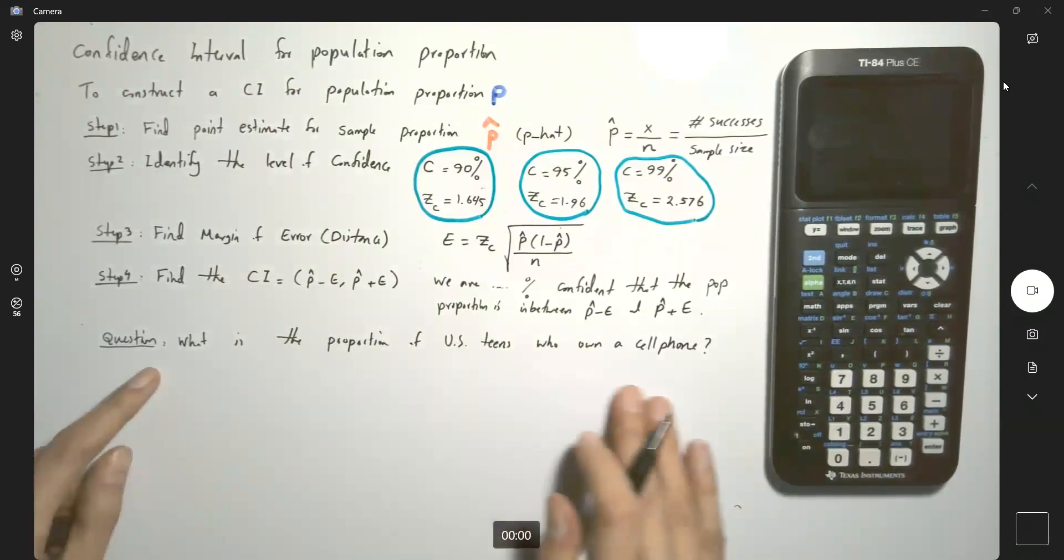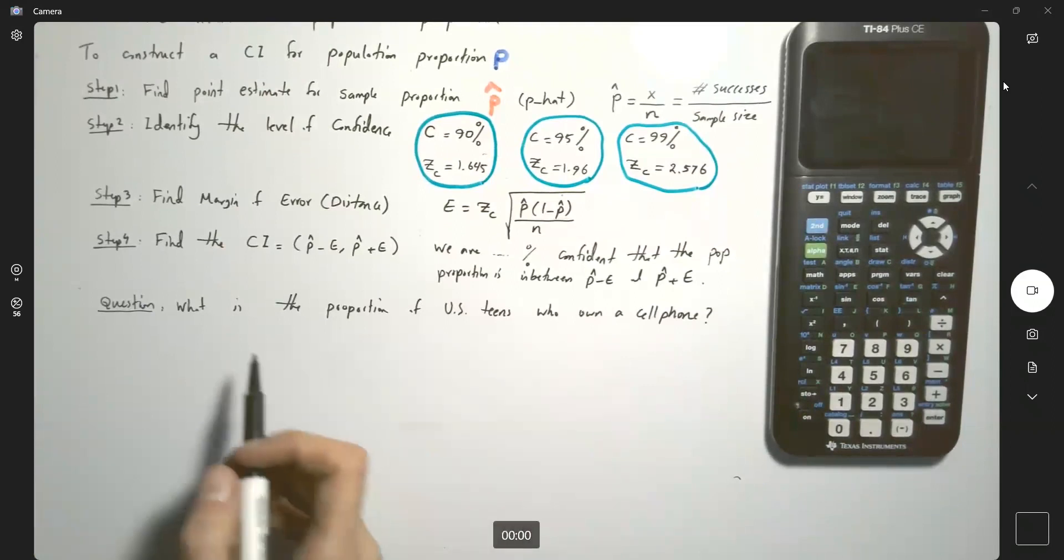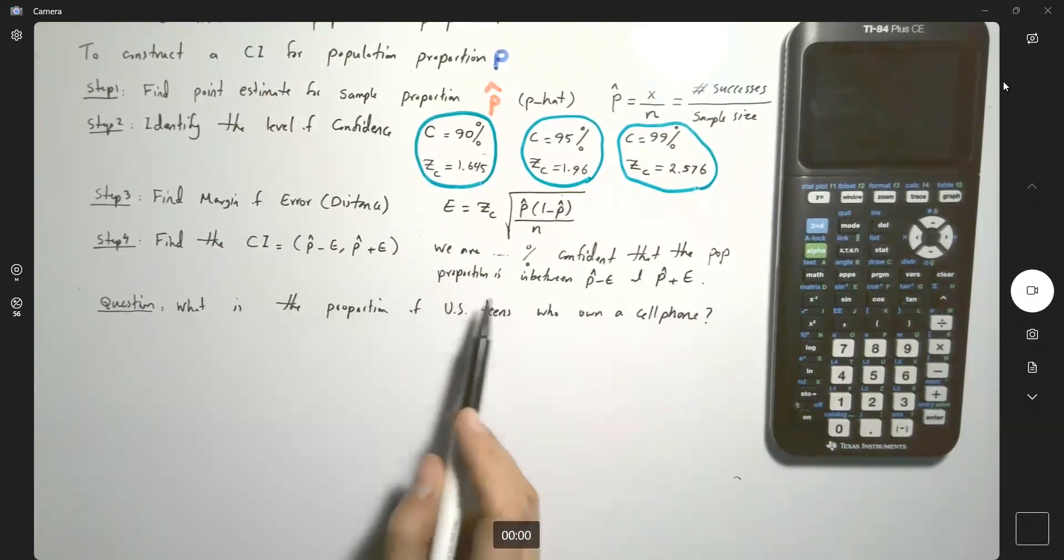Our very first step is asking a question. It's basically taking forever. We don't have enough money. We don't have enough resources to ask every single U.S. teen. So what are you going to do? We're going to take a random sample.